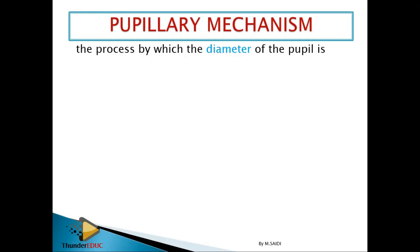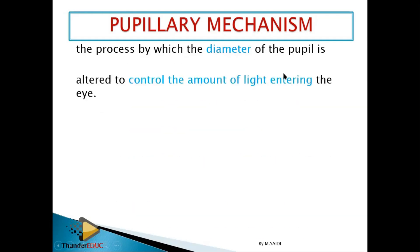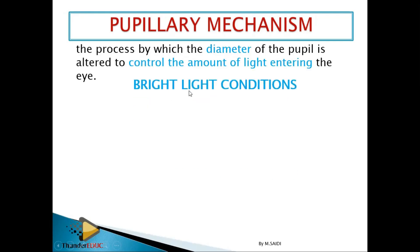How much light is entering the eye? That is what you call pupillary mechanism — it's the process by which the diameter of the pupil is altered to control the amount of light entering the eye. The light can be adjusted depending on whether conditions are bright or dim.